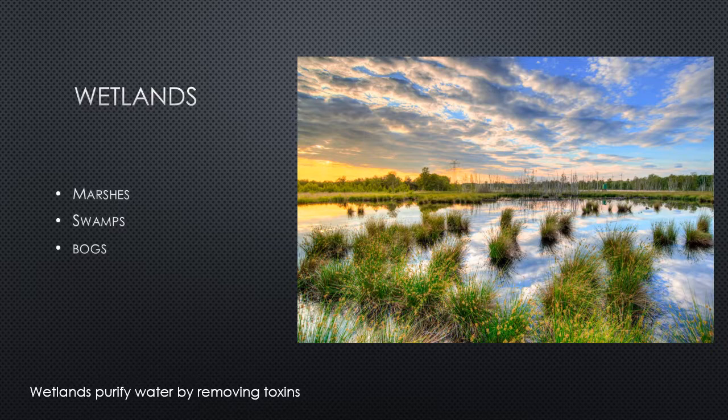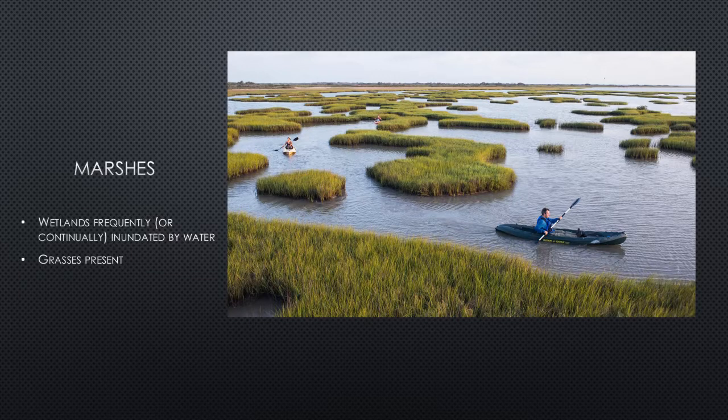Without wetlands we would have a buildup of toxins in the water supply. Marshes are frequently inundated with water — they always keep at least a small amount — and they are signified by the grasses present. This picture is off the coast of North Carolina in Swansboro. You can see kayakers paddling between the grasses as the tide comes in, and many animals depend on these grasses.